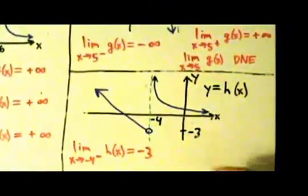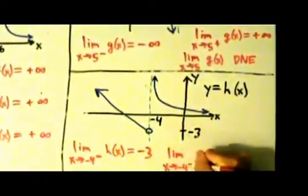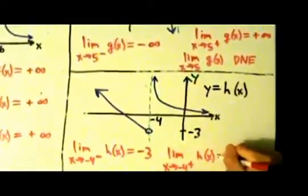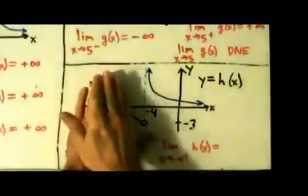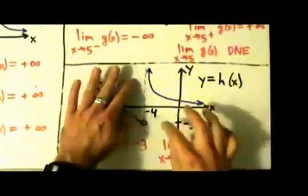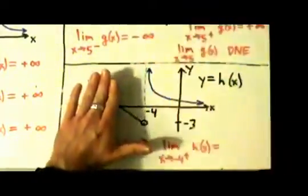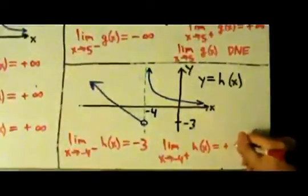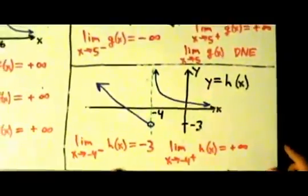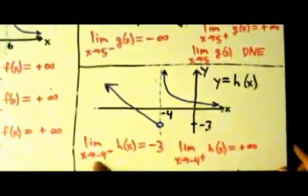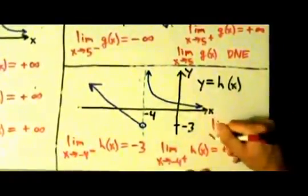Now what about the right-hand limit? The limit as x approaches negative 4 from the right of h of x equals what? Well, here we cover up the left. Just look at the right side. As x comes into negative 4 from the right, the y values are shooting off upwards to positive infinity. So the left-hand limit is negative 3, the right-hand limit is positive infinity. So the two-sided limit, you guessed it, does not exist.